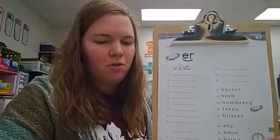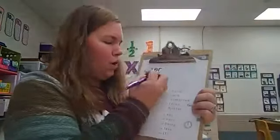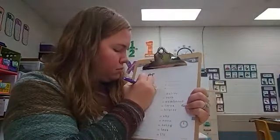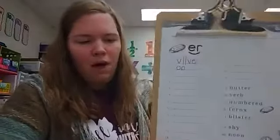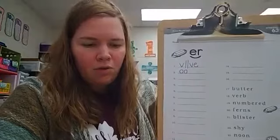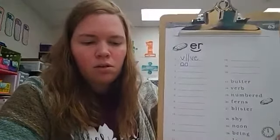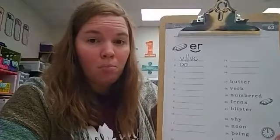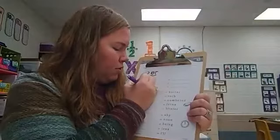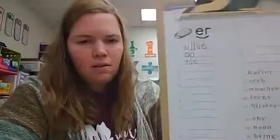Number two, oo, oo, like in the word spoon. Vowel digraph, OO. Number three, toll. Toll, like the word brittle. That is final, stable syllable, T-L-E, toll.